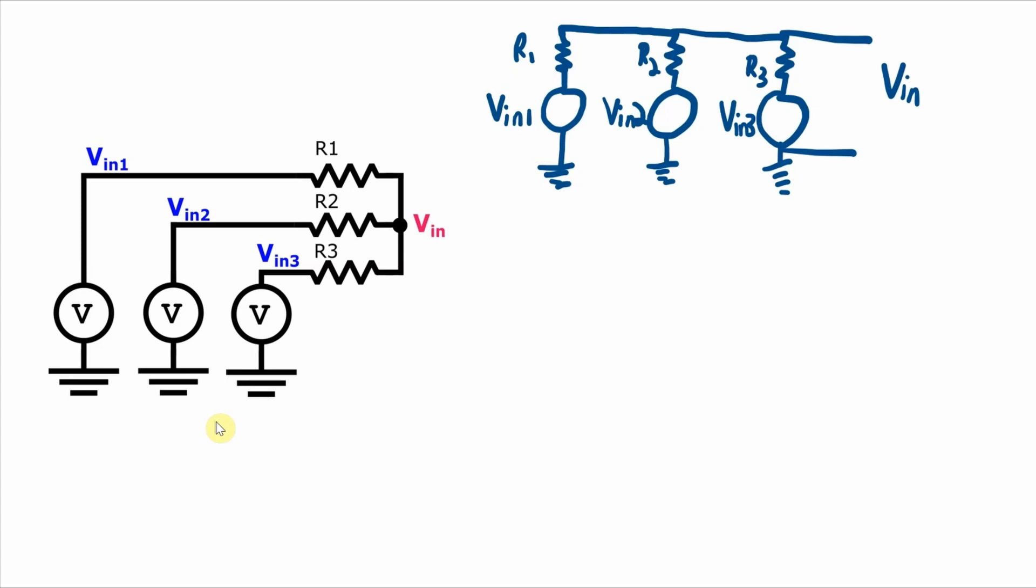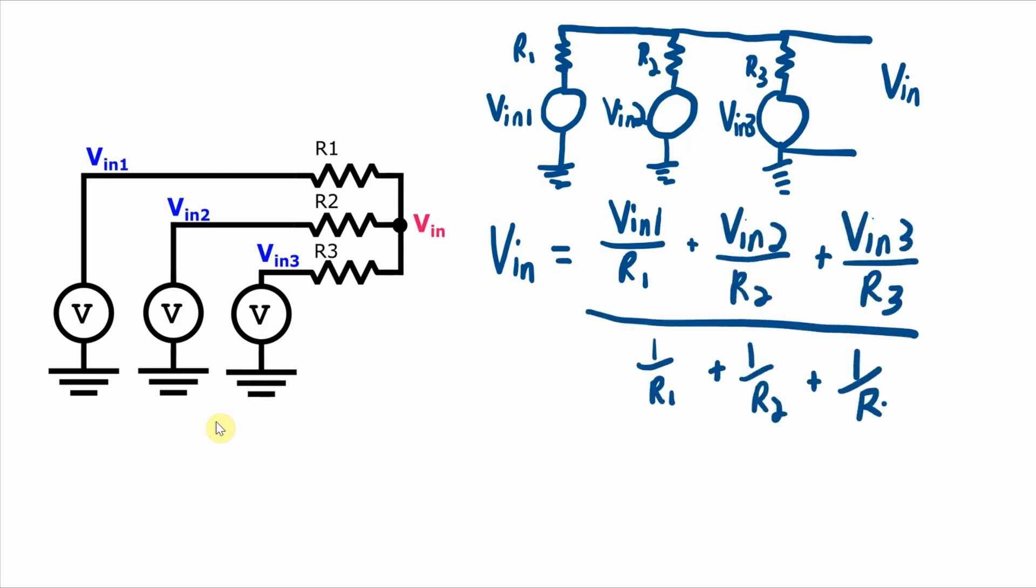And now it should be a more obvious application of Millman's theorem. Now the theorem says that when you have these parallel combinations of sources and resistors, the overall voltage of that parallel combination looks like this. So this is the form of the equation when we assume that R1, R2, and R3 are different resistor values.